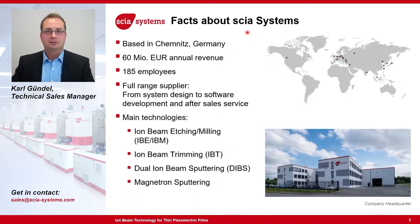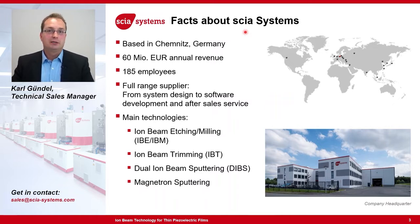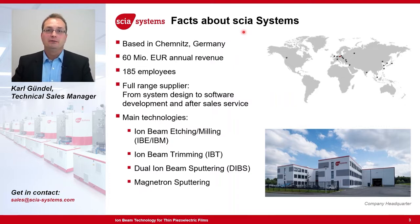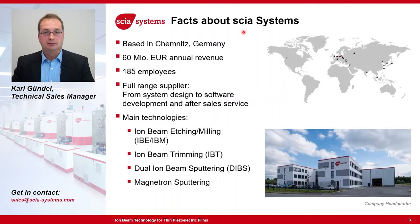Who is Skia Systems? Skia Systems is the world number one supplier of ion beam tuning technology. We are located in Chemnitz in Germany, and we currently have 185 employees with approximately 60 million euros annual revenue. We are a full range supplier, meaning we do the complete mechanical design, the software development, and the after-sales service.